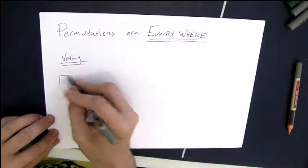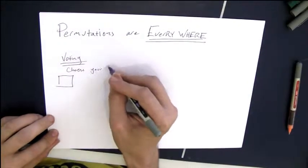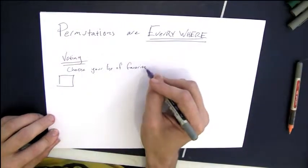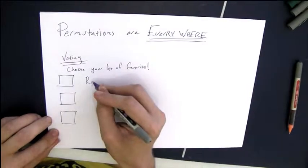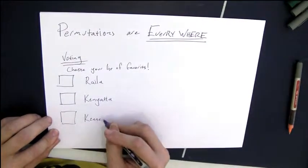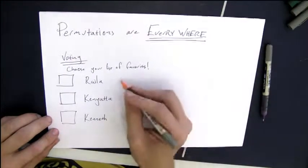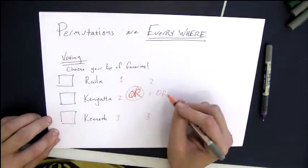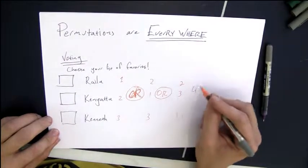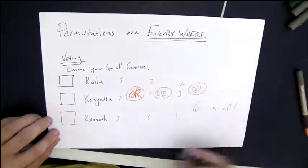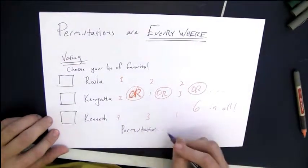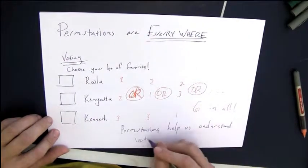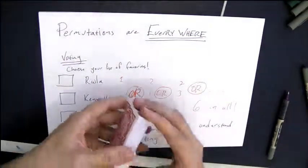Permutations are everywhere. So let's say we're looking at voting, for example, and you're supposed to choose your list of your favorite candidates, and maybe there's Raila and Kenyatta and Peter Kenneth. And you can choose maybe the 1-2-3 ordering, or you could choose the 2-1-3 ordering, or the 2-3-1 ordering, or whatever. So there's six different ways of ordering these three candidates.